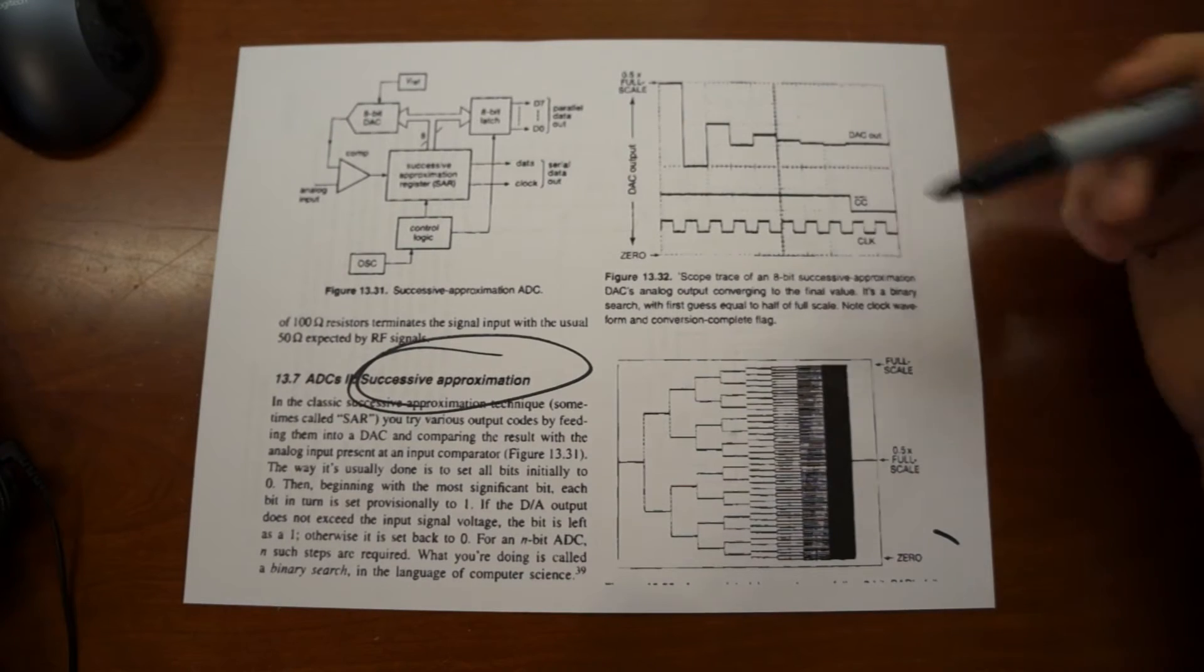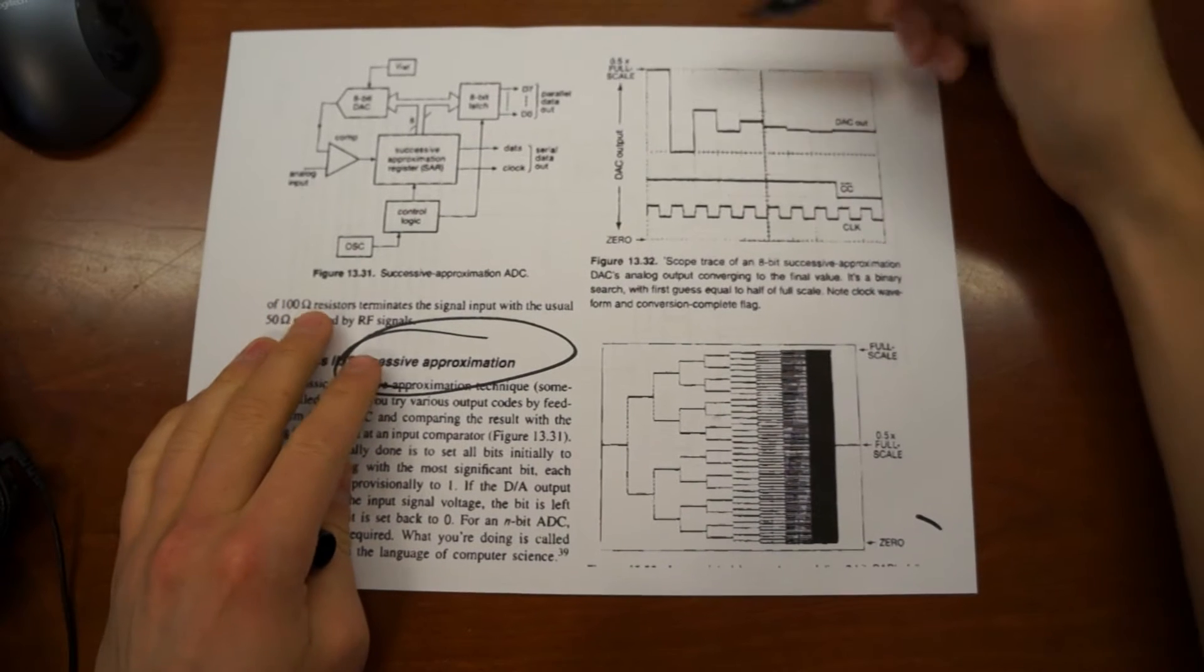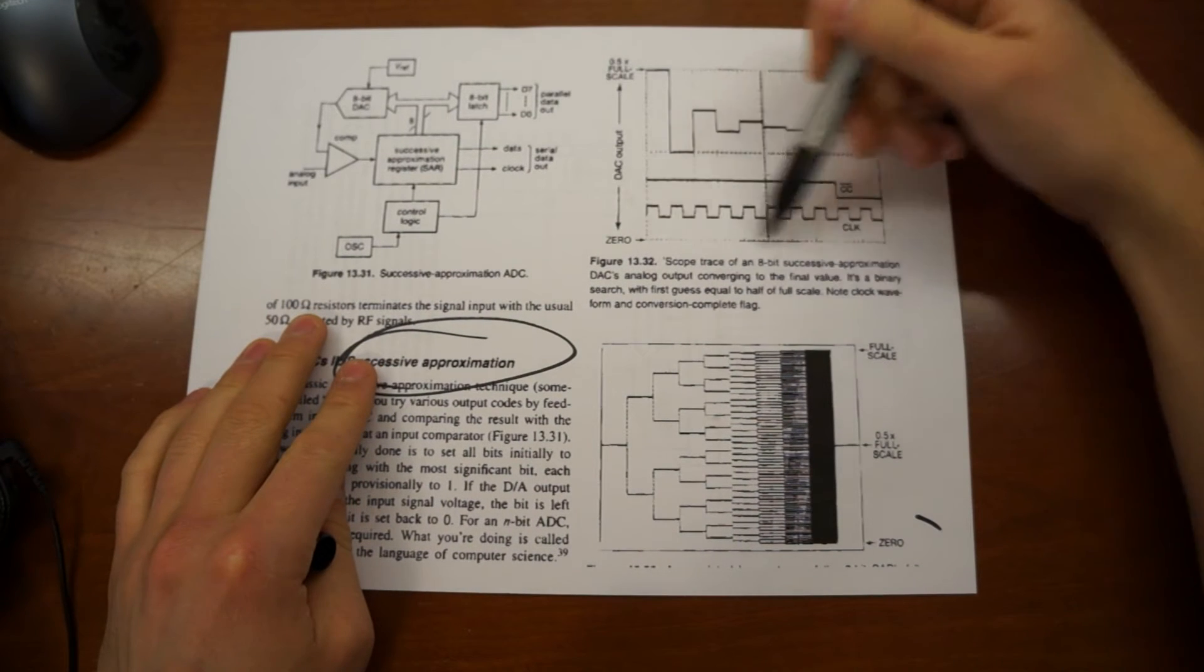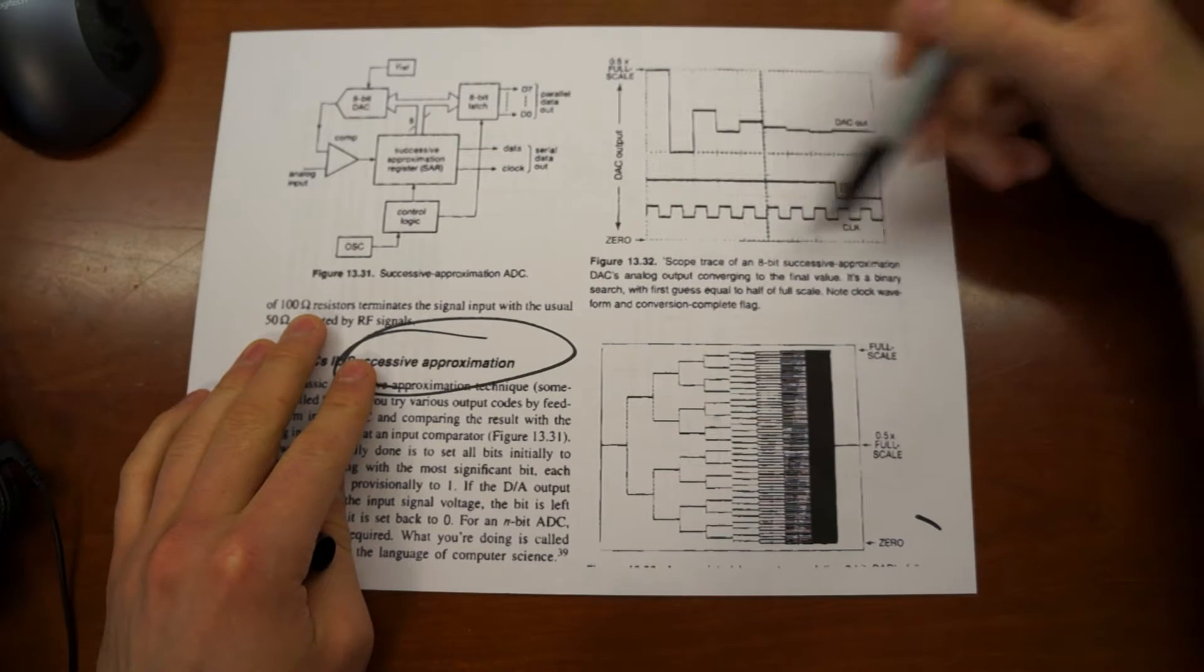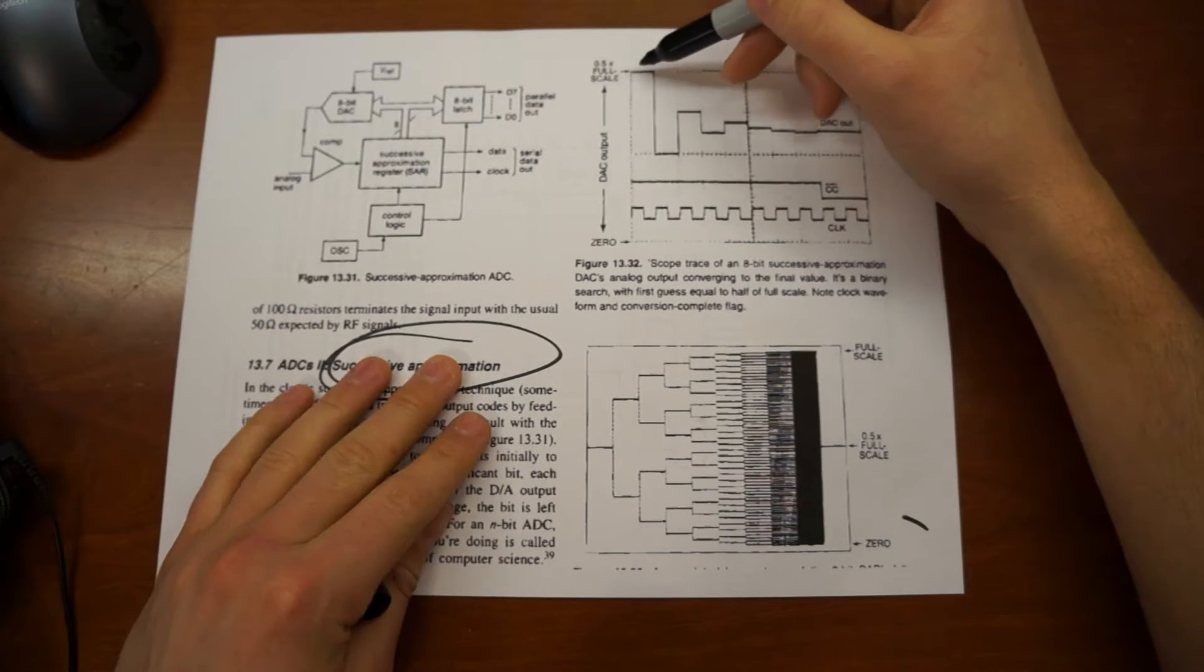But it's super handy, super useful to have. And in this case, very nice graphics here. We have, in the top right, you can see this is a scope trace of an 8-bit Successive Approximation DAC's analog output.